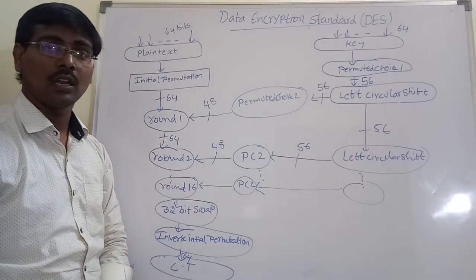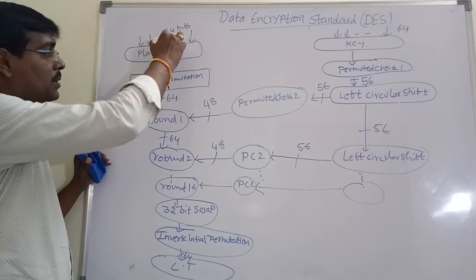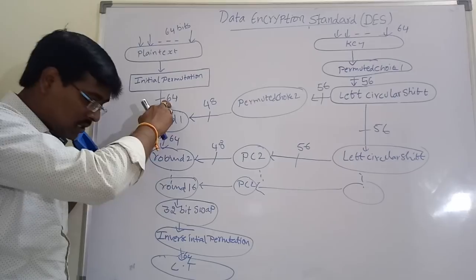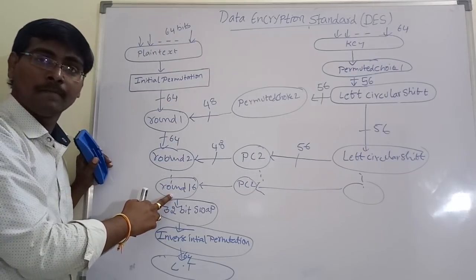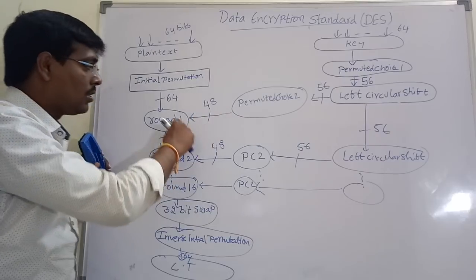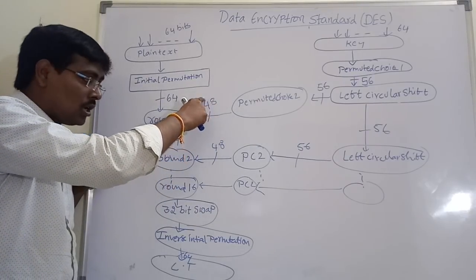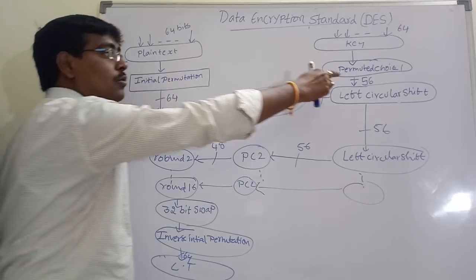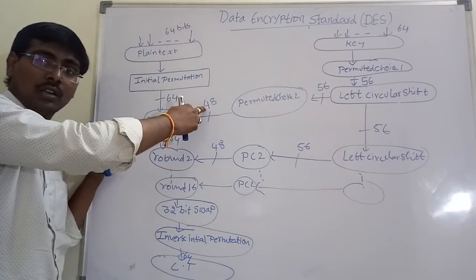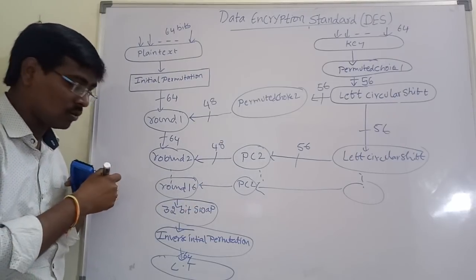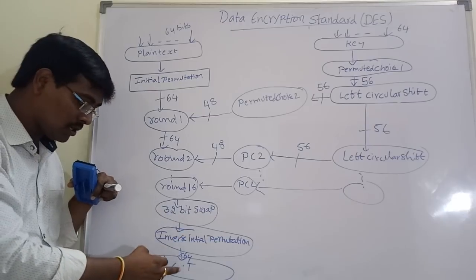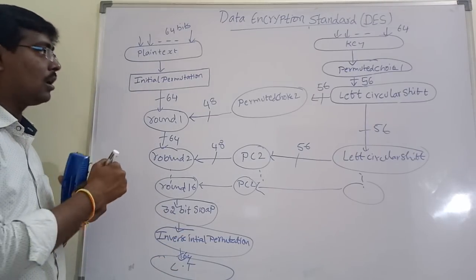This is the normal DES algorithm. To summarize: 64 bits are applied into initial permutation, then applied into 16 rounds. For each round, we provide a sub-key of 48 bits — generated by applying permuted choice 1 to the 64-bit key to get 56 bits, then applying permuted choice 2 to get 48 bits. We generate 16 keys for 16 rounds. After completion of the 32-bit swap and inverse initial permutation, we produce the ciphertext.